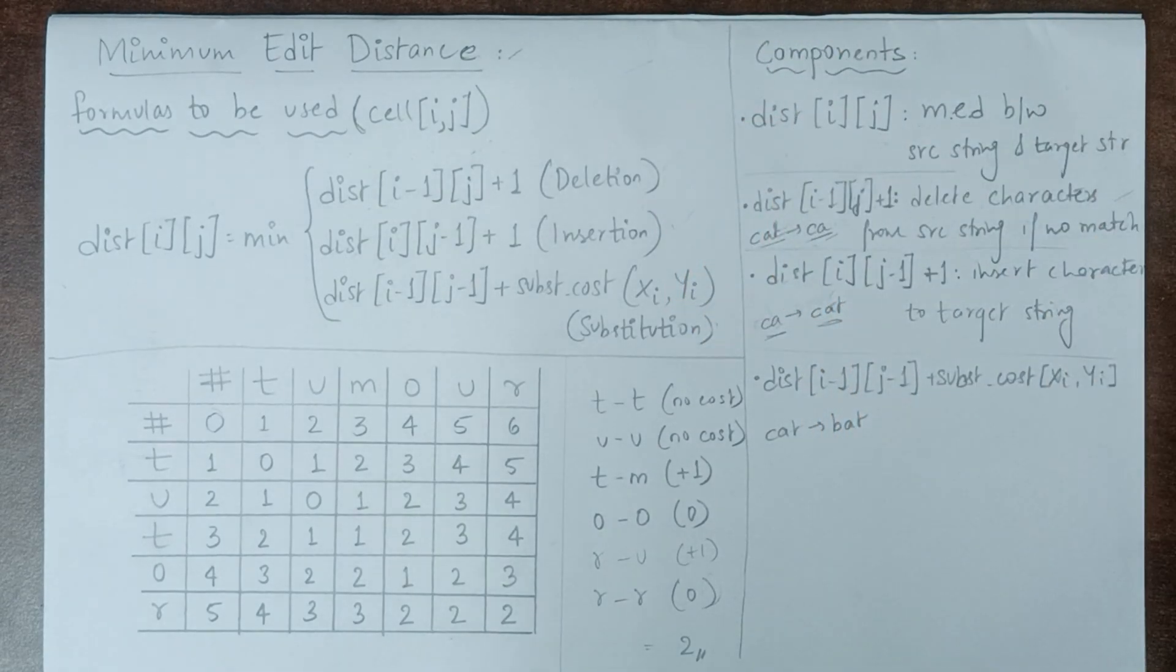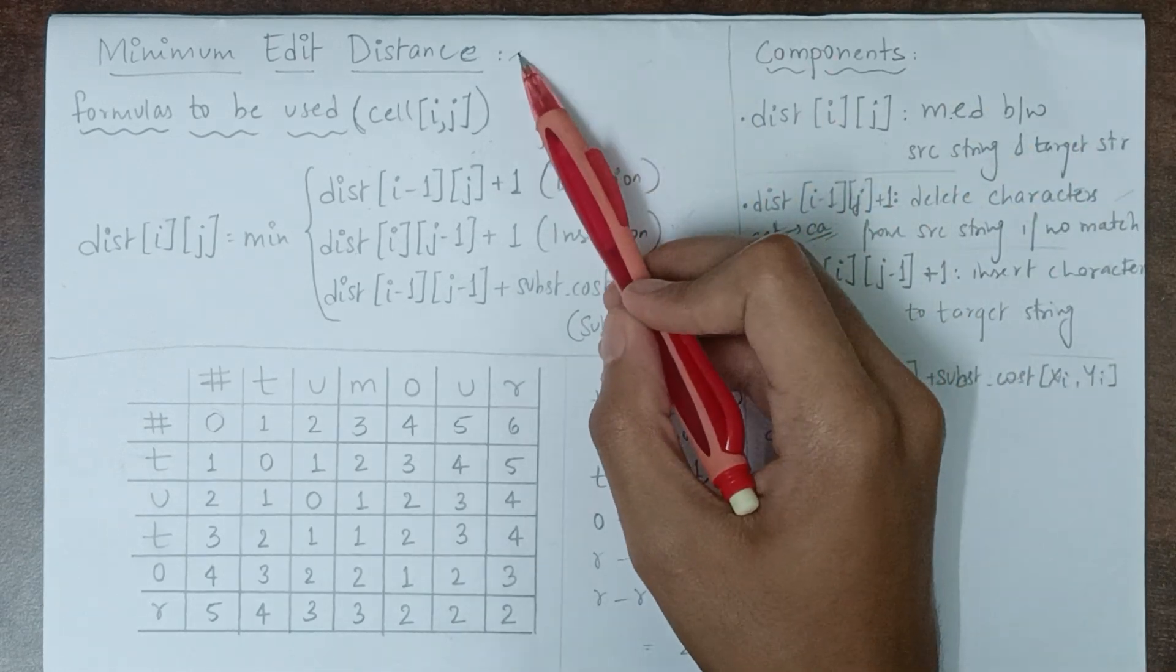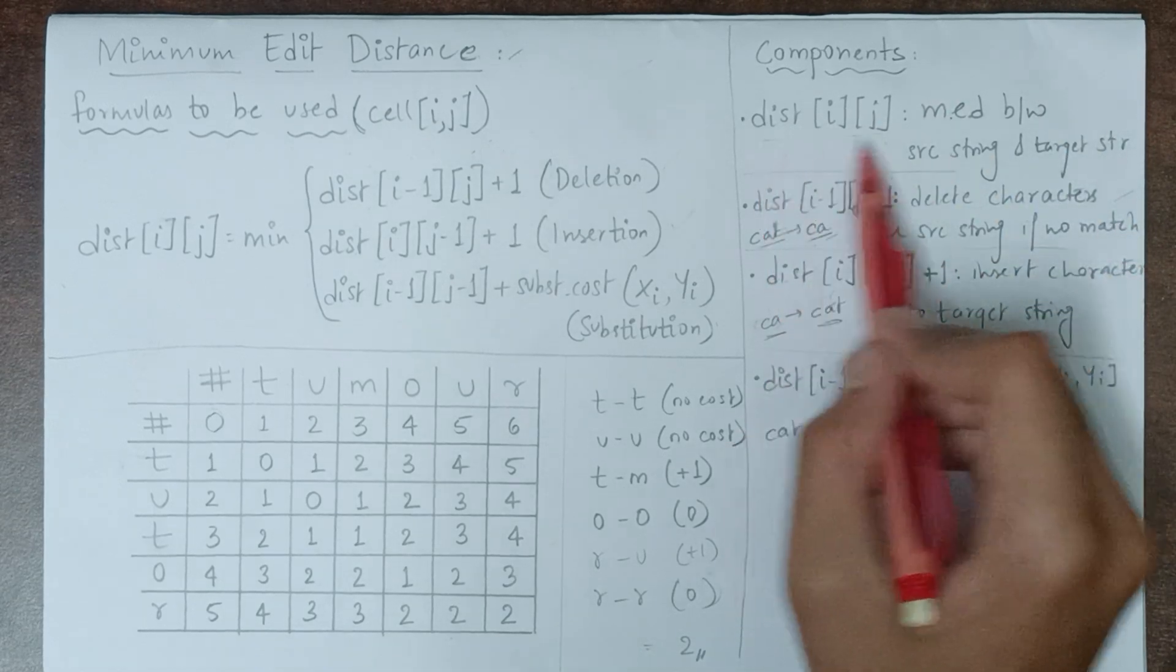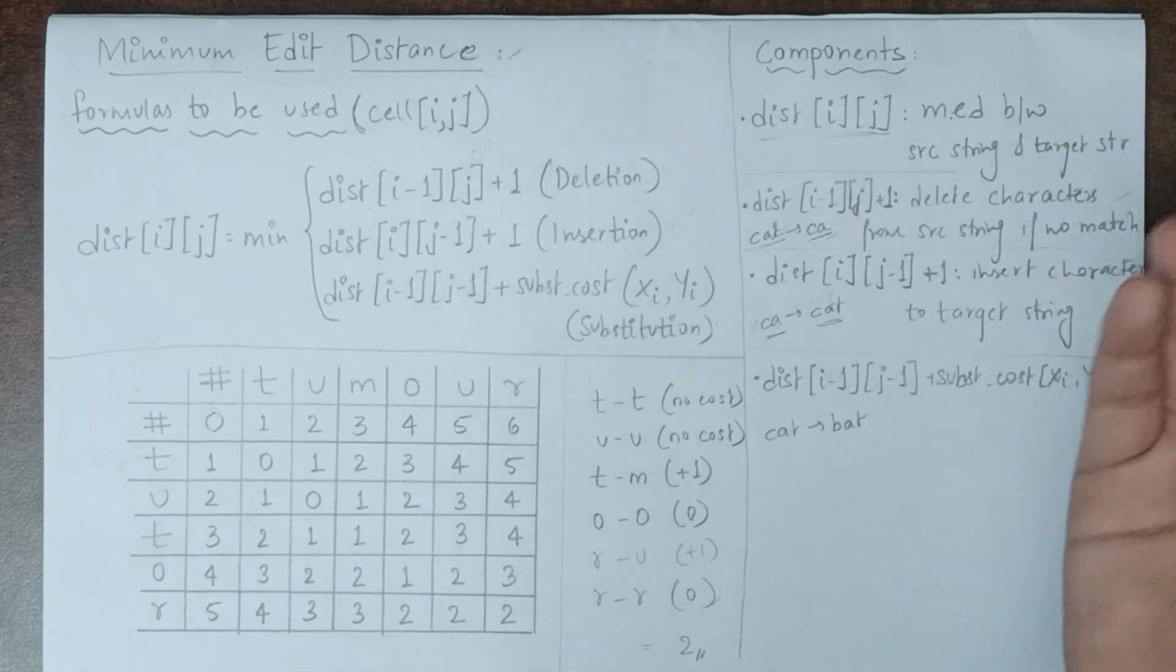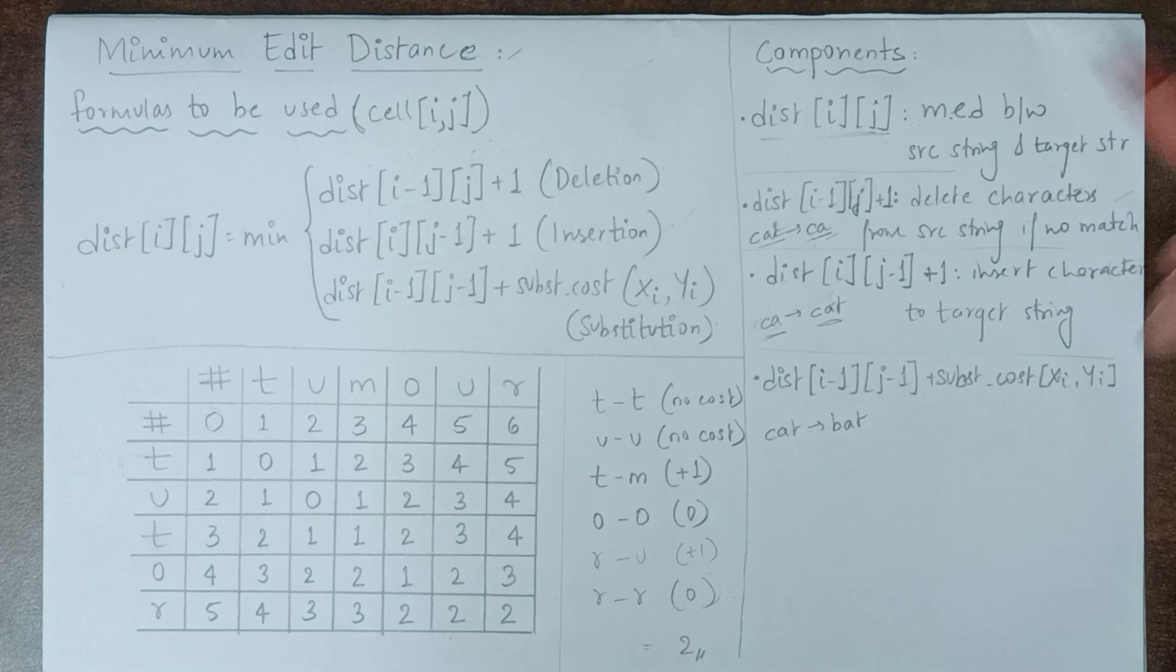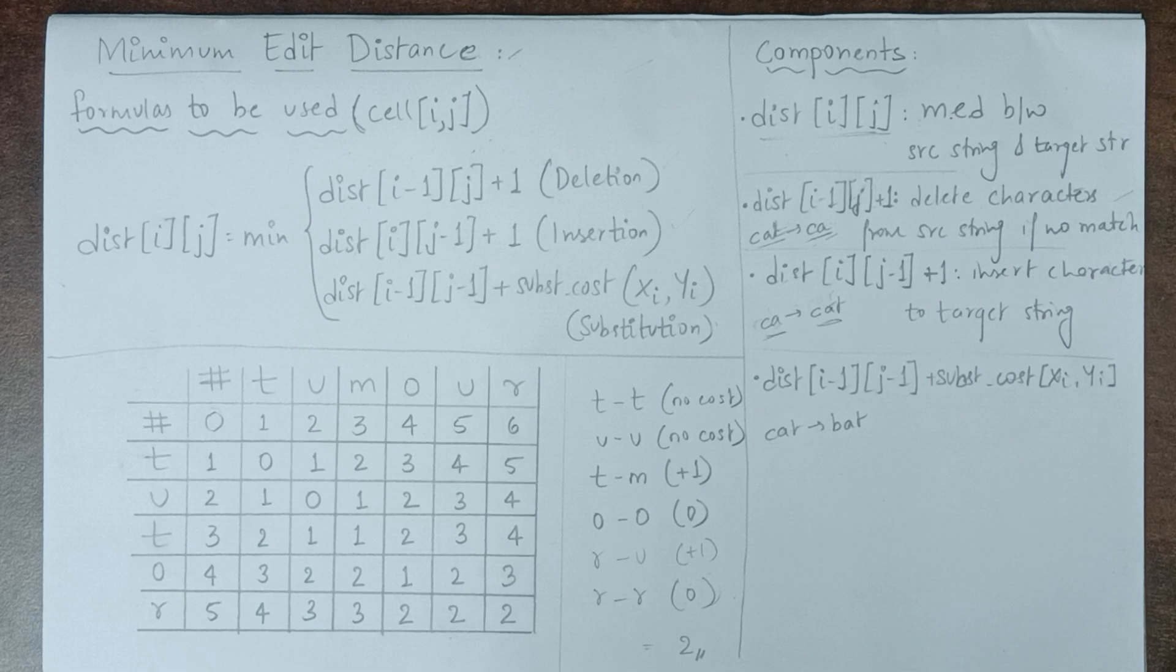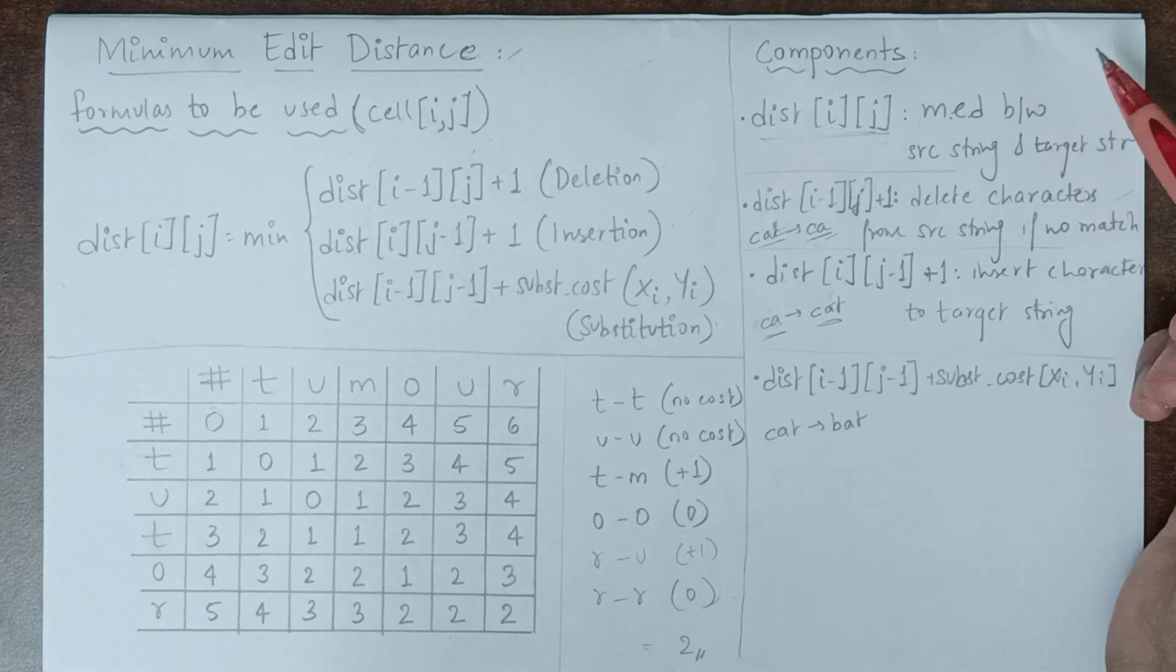Today we will be discussing minimum edit distance, which is a concept under natural language processing. Before we begin, let's understand what minimum edit distance means. Minimum edit distance can be represented by a distance component, written as distance of i and j. This shows the minimum distance between the source string and target string, which needs to be edited to convert the source string to the target string.